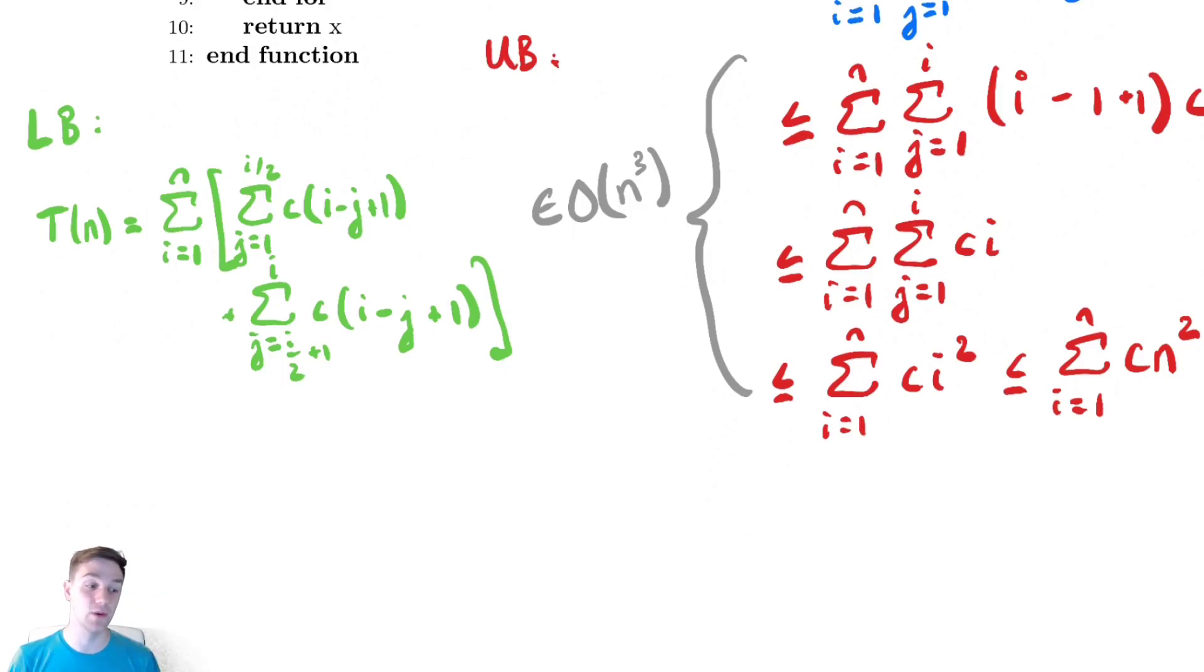And just like we had to be careful with the upper bound, we also need to be careful with the lower bound. We need to ensure that we keep the larger of those two summations. So because it is a decreasing function of j, the larger of the two would be the first, and that means we're throwing out the second. So this is greater than or equal to the sum from i equals 1 to n of the sum from j equals 1 to i over 2. I'm going to do one additional thing here, which is I'm going to throw out all of the second half of the terms, and I'm also going to drop that plus 1 that's inside of the summation.